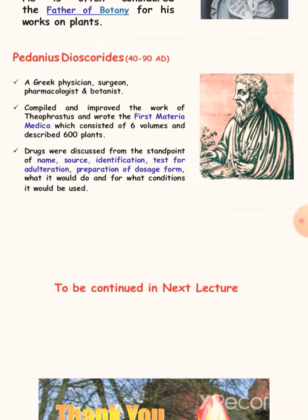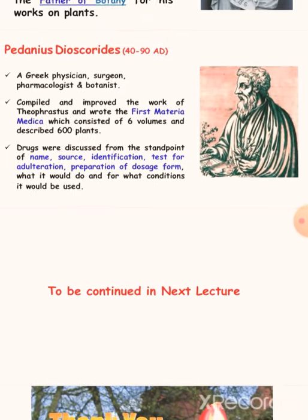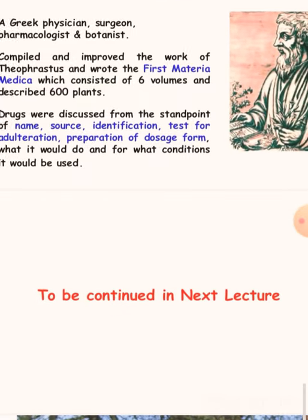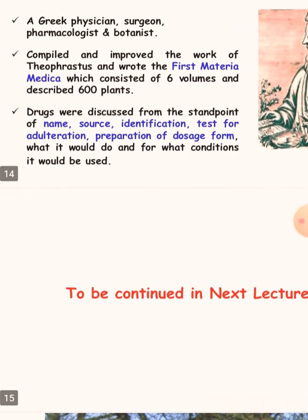Pedanius Dioscorides was a Greek physician, surgeon, pharmacologist, and botanist. He wrote De Materia Medica, which consisted of six volumes and described 600 plants. The drugs were discussed from the standpoint of name, source, identification, tests for adulteration, and preparation of dosage forms.